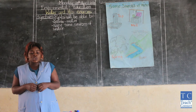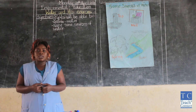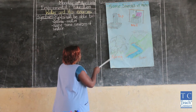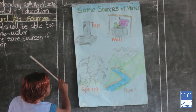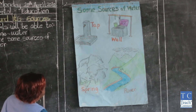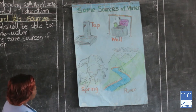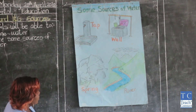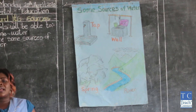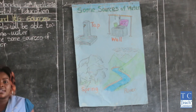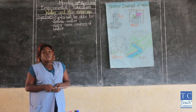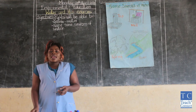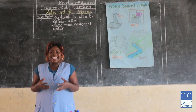We are going to look at our cardboard and tell you what you can find on it. What do we have here? What can you see on the cardboard? Tap — good, you can see tap. What else can you see? Well — good, you can also see well. What again? River — good. After looking at all of this, what is the general name we can give to all of these? We can call them sources. What are sources? Sources are the various ways we can get water.